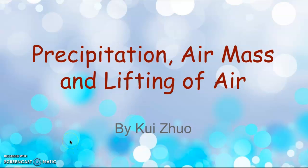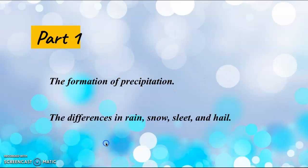Here I talk about the precipitation, air mass, and the lifting of air. The first part we want to talk about is the formation of precipitation and the different water forms: rain, snow, sleet, and freezing rain.